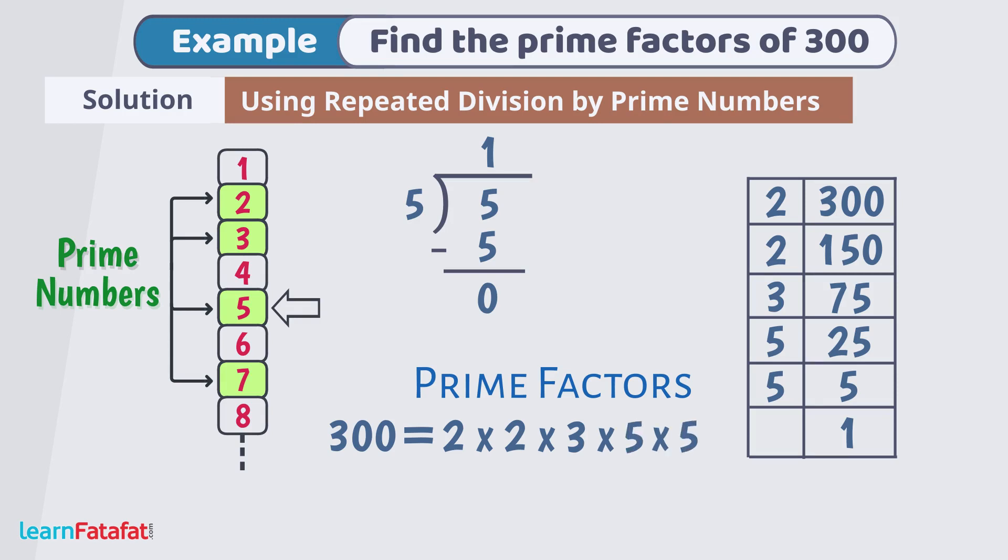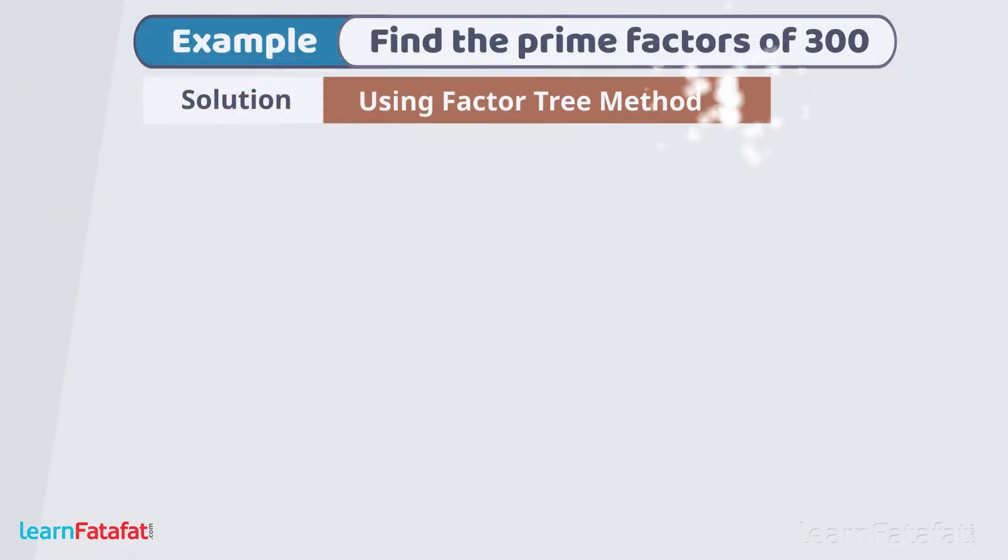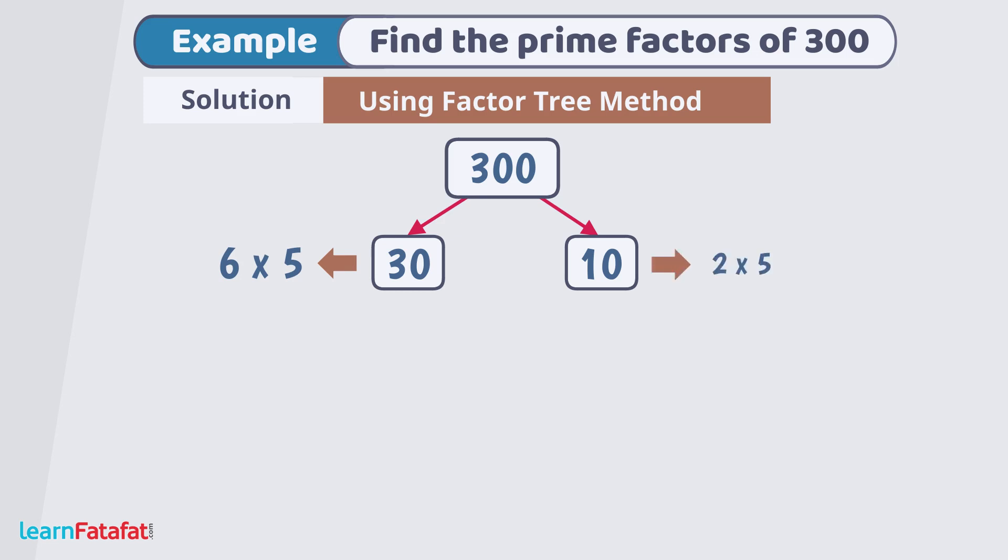We can also find factors by factor tree method. 300 can be expressed as product of 30 and 10. So, let's make 2 branches of the factor tree. One is 30 and other is 10. 30 can be broken as product of 6 and 5. And 10 can be written as product of 2 and 5.